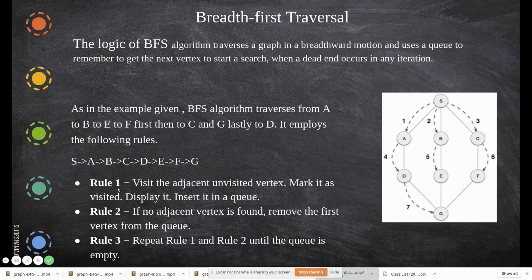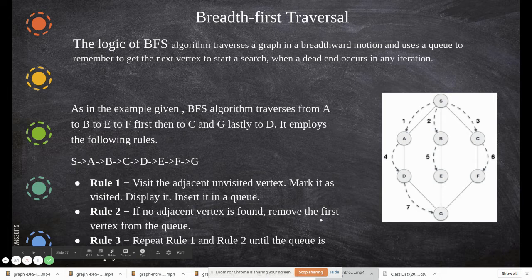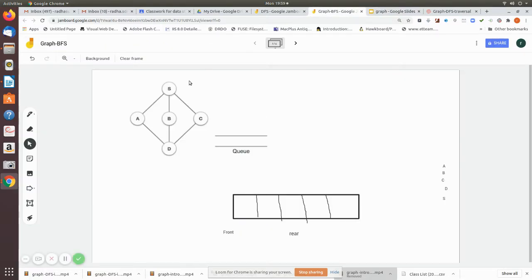The rules for BFS flow are: visit the adjacent unvisited vertex, push the unvisited adjacent vertex into the queue, then dequeue it and display it — mark it as visited. If no adjacent vertex is found, remove the first vertex from the queue. Repeat rules one and two accordingly until the queue is empty.